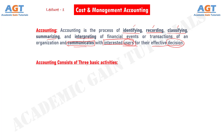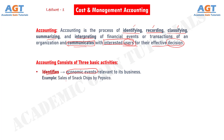Accounting consists of three basic activities. Number one: accounting identifies the economic events relevant to its business. For example, sales of snack chips by PepsiCo is an economic event — PepsiCo provides its customers with a product and in return receives money from its customers. This is a financial or economic event, and the first job of accounting is to identify this economic event.